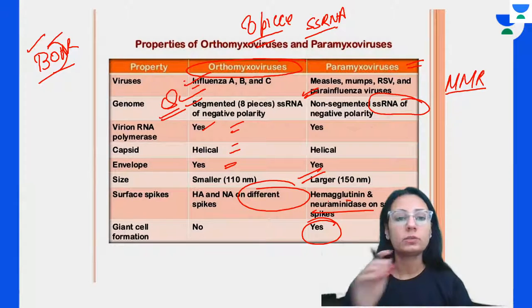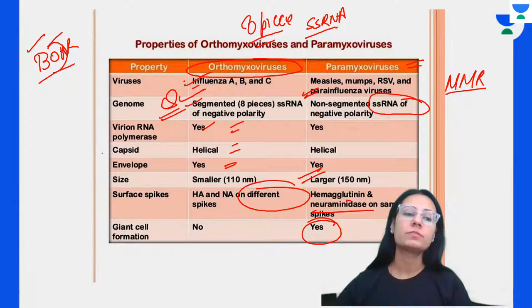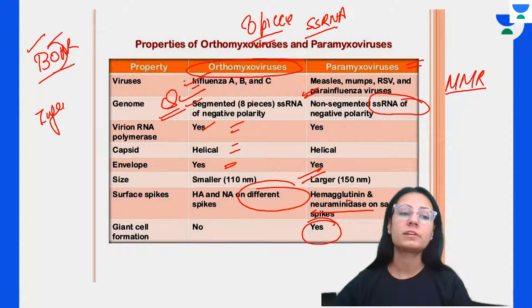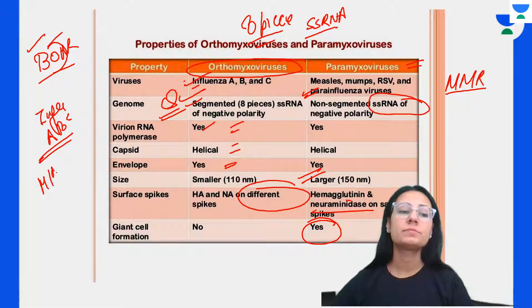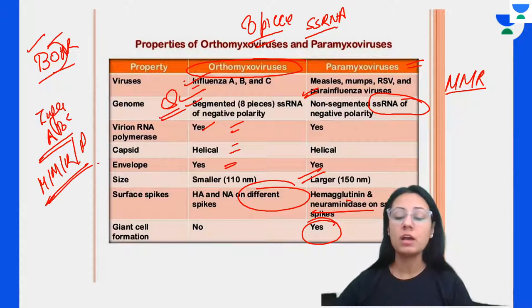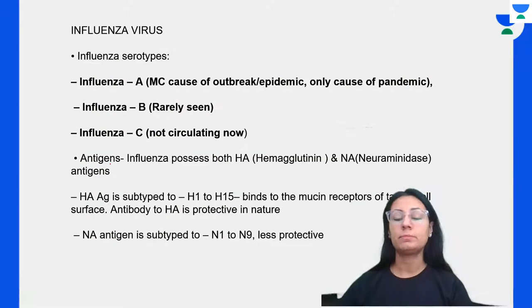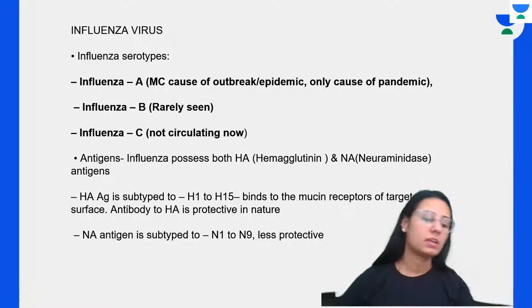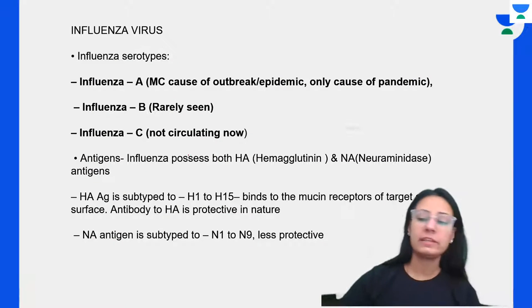Influenza A, B, and C are in orthomyxovirus; measles, mumps, respiratory syncytial virus, and parainfluenza are in paramyxovirus. Influenza A is the most common cause of outbreaks and epidemics, influenza B is rarely seen, and influenza C is stable.